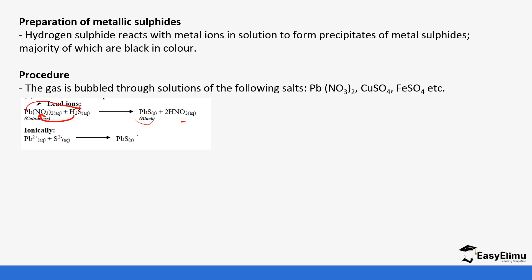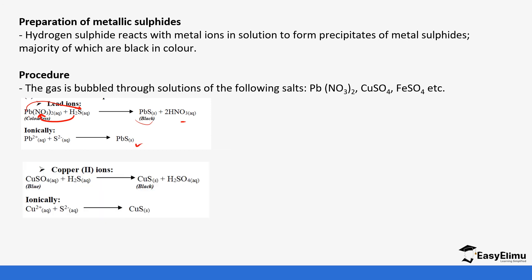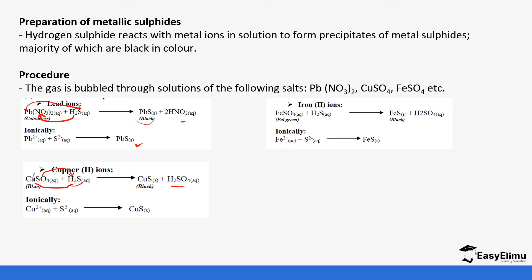Ionically, lead ions react with sulfide ions to form lead sulfide. Similarly, copper ions react with hydrogen sulfide to form copper sulfide and sulfuric acid — the copper ions react with the sulfide ions to form copper sulfide, and the sulfide ions react with hydrogen to form sulfuric acid. Iron(II) sulfate, which is green, reacts with hydrogen sulfide to form iron(II) sulfide, which is black, and sulfuric acid. Zinc nitrate reacts with hydrogen sulfide to form zinc sulfide and nitric acid — the zinc ions react with the sulfide ions to form zinc sulfide.